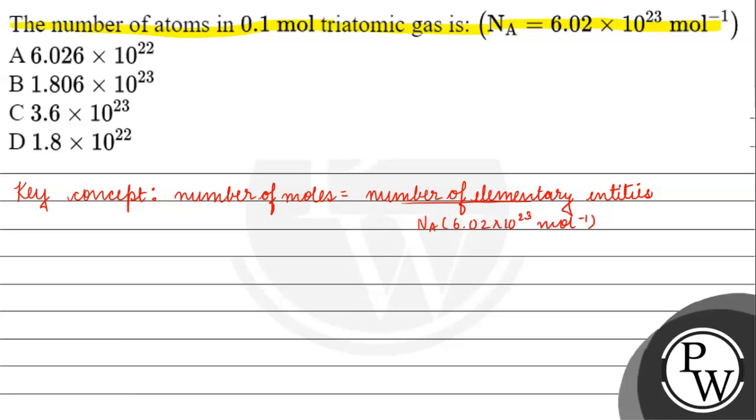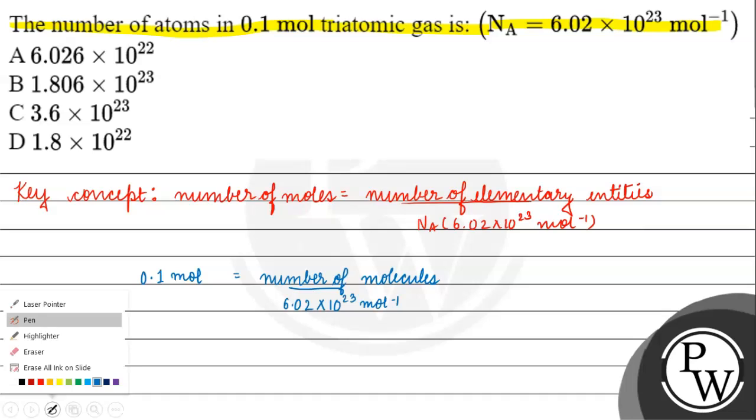Now, we are asked the number of moles. The number of moles is 0.1 moles. How will we find the number of molecules? We will calculate the number of molecules, which comes out to 6.02 into 10 to the power 23 into 0.1.